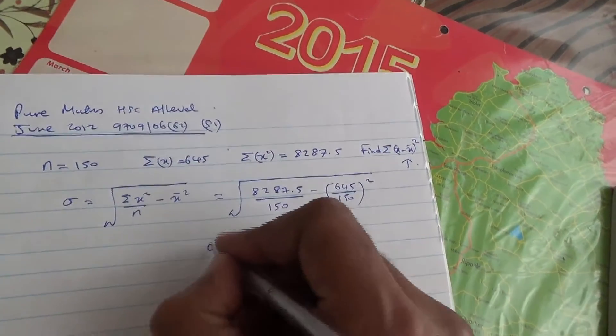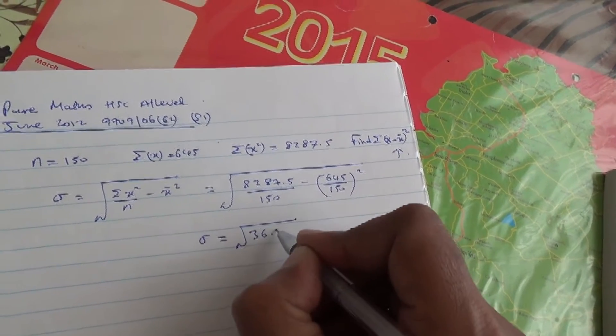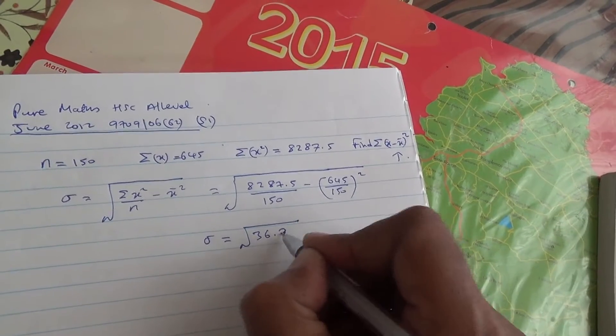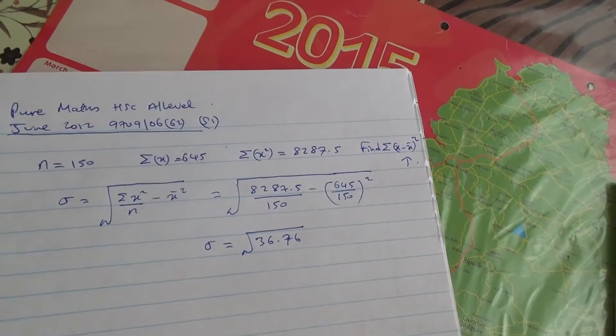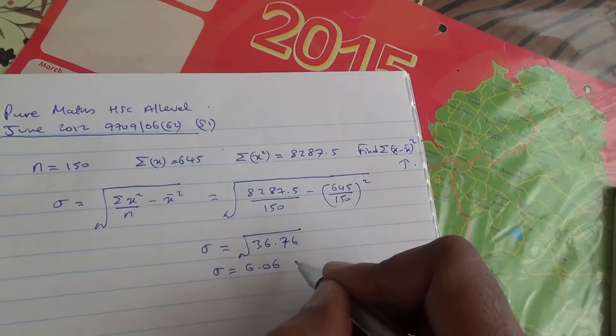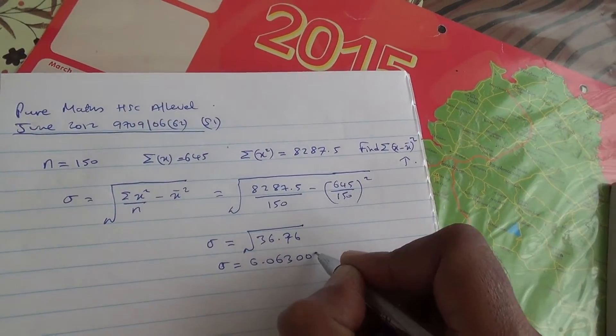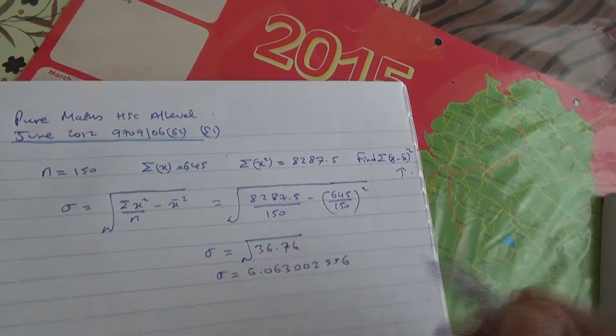So, that's going to be, then, the standard deviation root of 36.76. And if you work that out on your calculator, it's going to give you 6.063002556.